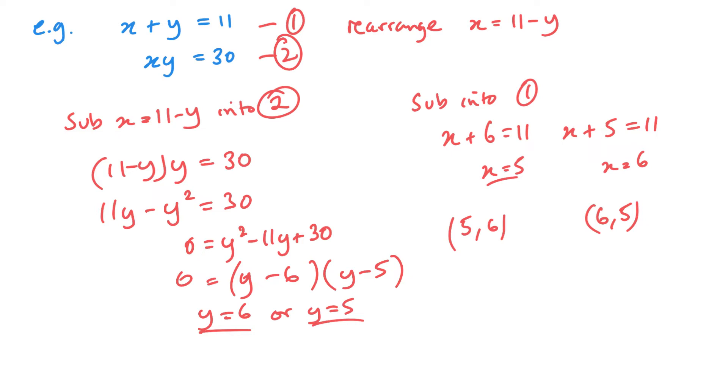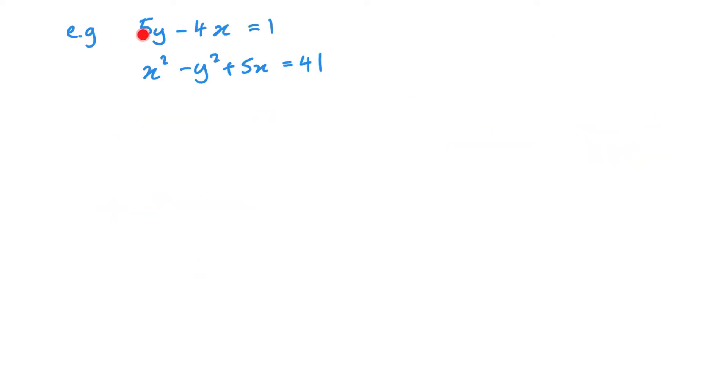Let's look at another example. Now again, you can see here's my linear equation. Here is my quadratic equation. So labelling them, I want to rearrange my first equation to make it either x equals or y equals. Now in this case, I'm going to rearrange it for y, as that makes the most sense, keeping things positive. And there we have it. Now we need to substitute that into equation 2.